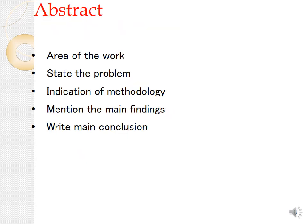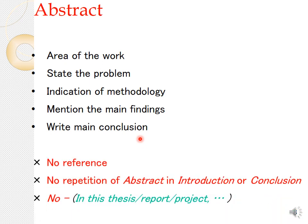The abstract should state the area of work, state the problem, indicate the methodology, mention the main findings, and write the main conclusions — all within 150 to 200 words. No references in the abstract unless absolutely necessary. Avoid repeating the abstract content in the introduction or conclusions. Never write 'in this thesis,' 'in this report,' or 'in this project' — you are submitting a paper.